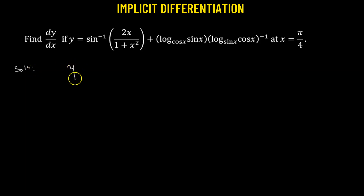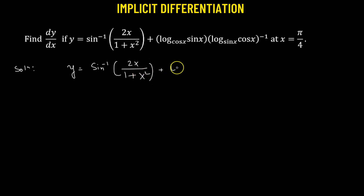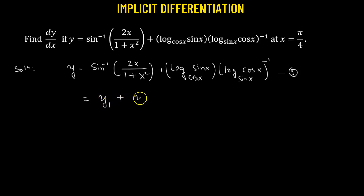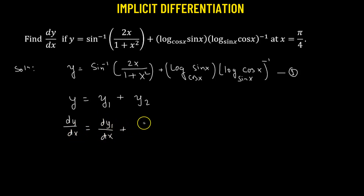We are provided with our function y in its implicit form: sine inverse of 2x divided by (1 + x²), plus log of sin x with base cos x, multiplied by log of cos x with base sin x, raised to the power of negative 1. We will consider the first term as y1 and the second term as y2, so that dy/dx equals dy1/dx plus dy2/dx.